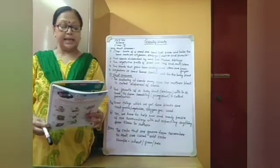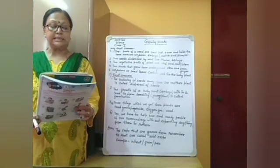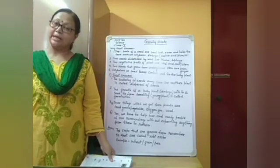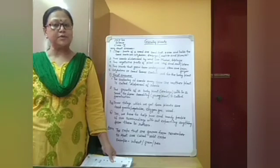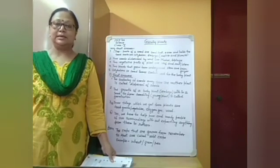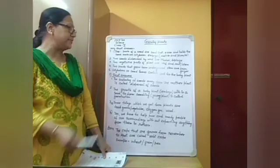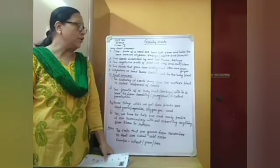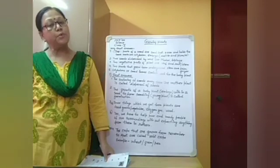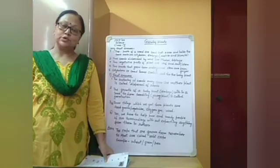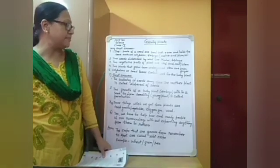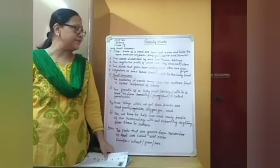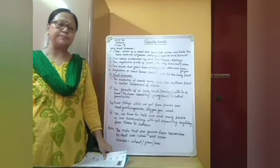The next question: name two plants that grow from their underground stem. As we read in vegetative propagation, two types of stem can grow another plant from them. Two plants that grow from underground stem are onion and ginger. We can also write potato and sweet potato. Onion, ginger, and potato are all actually underground stems — write any two examples.